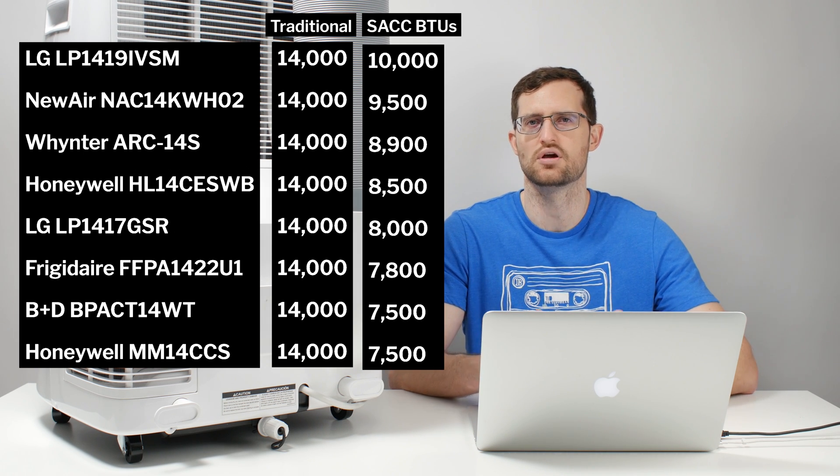And if you're interested more in the difference between single hose and dual hose units we do have a video on that that we will link to in the description of this video. In any case, moving on to the higher capacity units here we have the LG LP1419IVSM and we have the NewAir NAC14KWH02. Now both of these units are relatively new to the market and both of these units are the top performers in the category. The LG currently holds the title as having the most SACC BTUs of any unit currently on the market and the NewAir is not far behind at 9,500 BTUs.